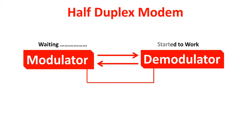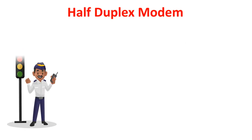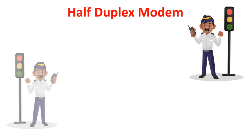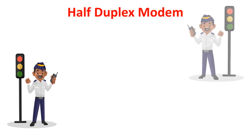An example of a half-duplex modem is a walkie-talkie. We have observed that traffic police use walkie-talkies to control traffic regulation on the road. In a walkie-talkie, two traffic officers cannot communicate together at the same time; one officer has to wait until the other officer completes sending their verbal message.